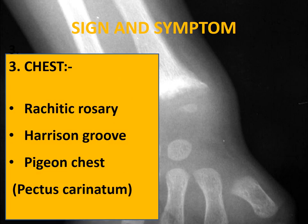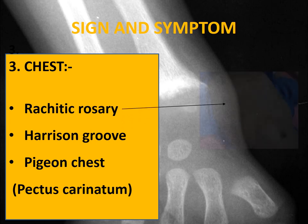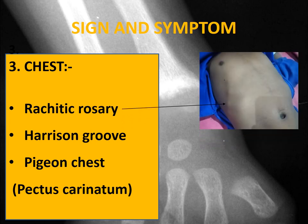In the chest, ricketic rosary is due to the prominence of the costochondral junction of the ribs. In this picture you can see the child is having the round-shaped ricketic rosary. We have to differentiate ricketic rosary from scorbutic rosary, which is seen in scurvy. The shape of the rosary in rickets is round, while in scurvy the shape is sharp and angulated. S for scurvy, S for scorbutic, and S for sharp — easy to remember.